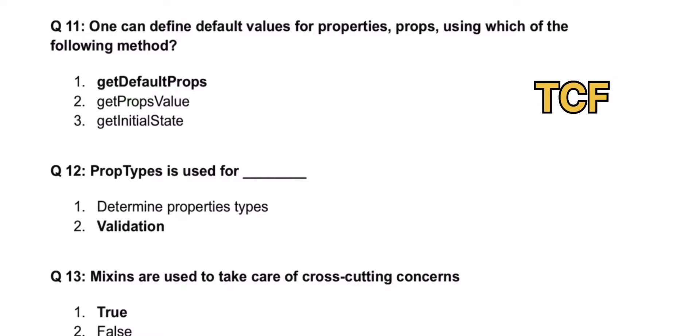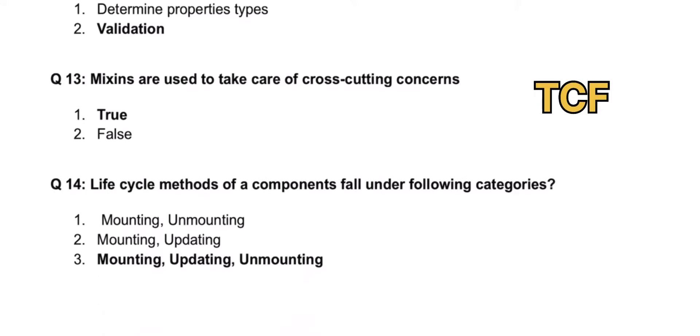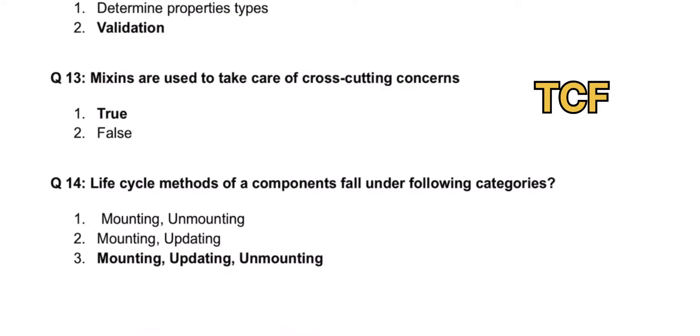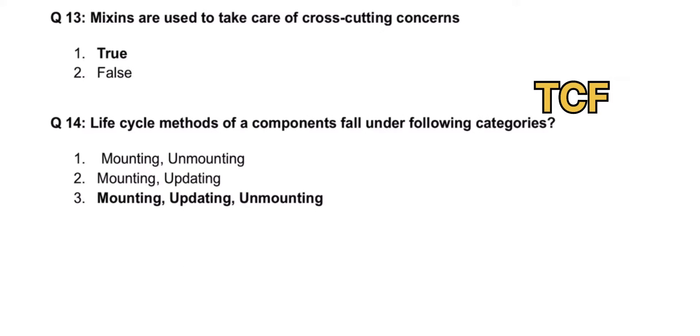PropTypes is used for validation. Mixins are used to take care of cross-cutting concerns - that is true. Lifecycle methods of components fall under which of the following categories? That is mounting, updating, and unmounting.